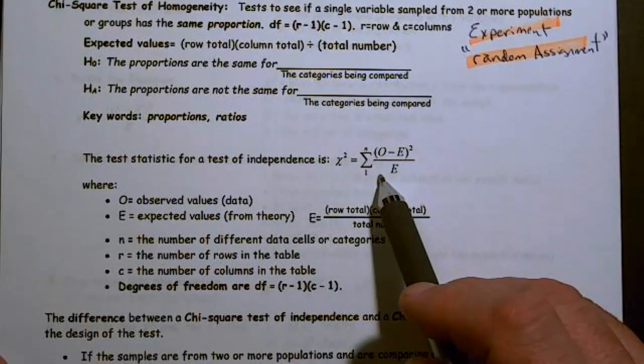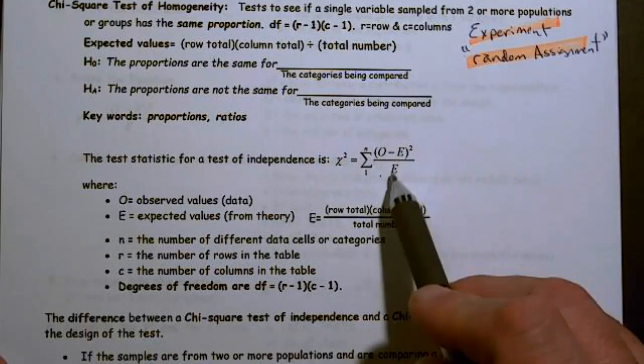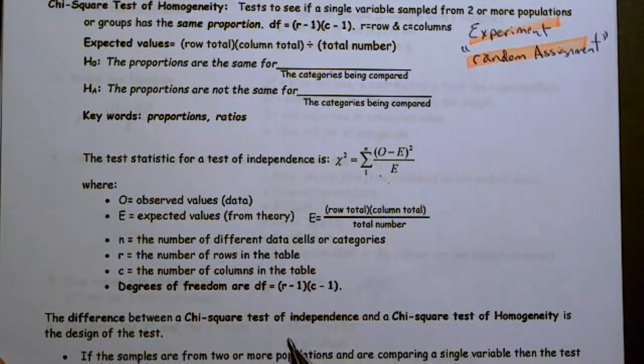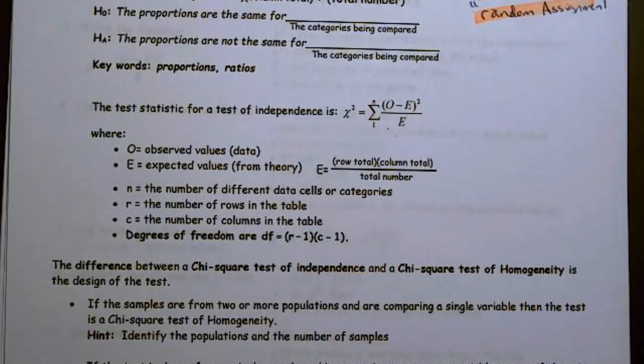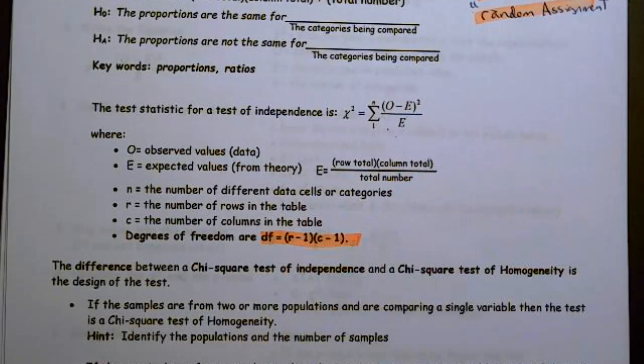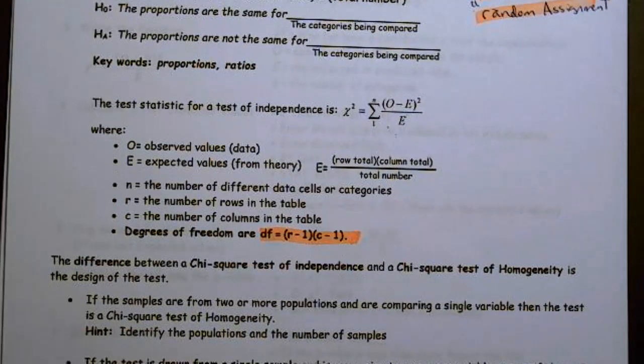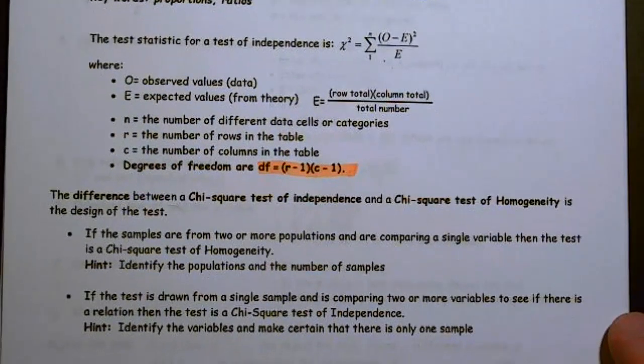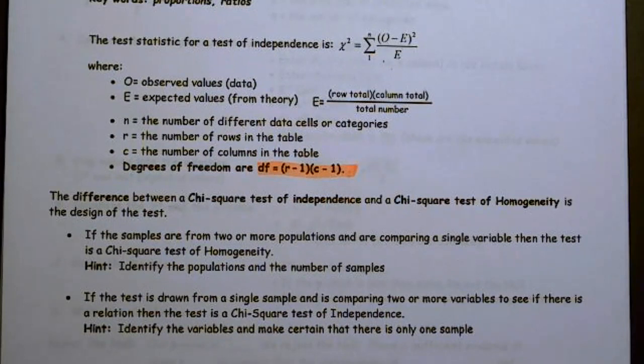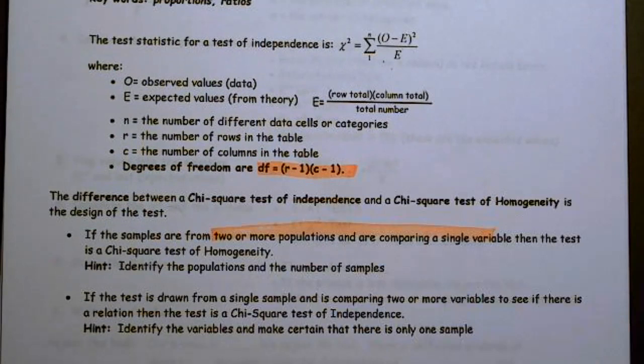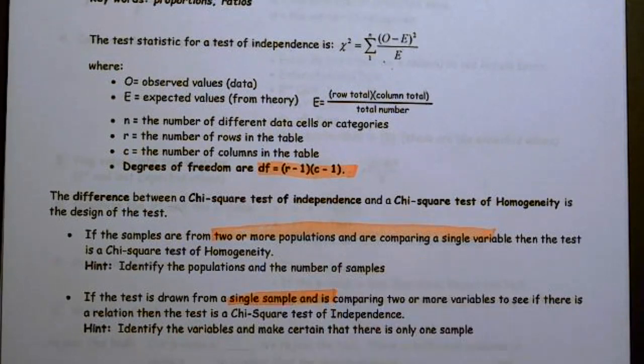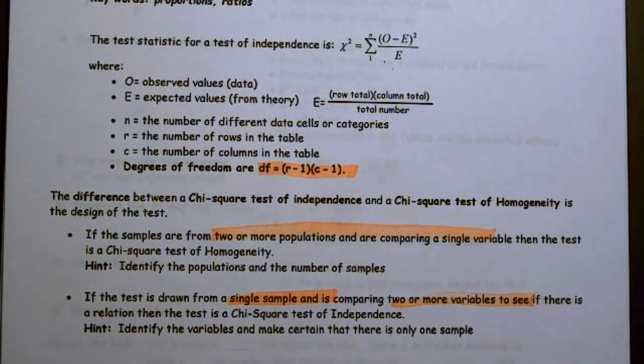Our formula is the same for all the chi-squared tests: observed minus expected squared over the expected. Degrees of freedom are just like what we had for independence, where we have rows minus one times column minus one. Once again, the difference between a chi-squared test of independence and a test of homogeneity is the design of the test. If the samples are from two or more populations and we're comparing a single variable, it's homogeneity. If the test draws from a single sample and comparing two or more variables, then we're working with independence.